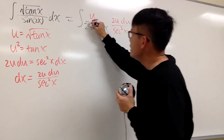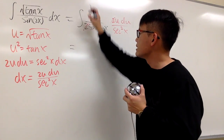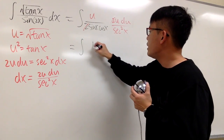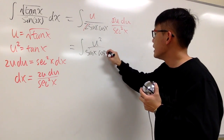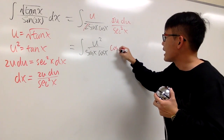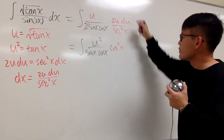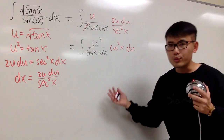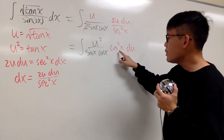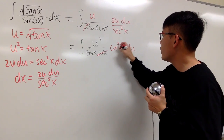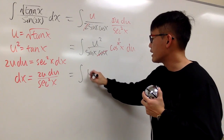This 2 and that 2 cancel — that's nice. On the top we have u times u, that's u squared. So this is the integral of u squared on the top over sine x cosine x. Now, 1 over secant squared x is cosine squared x. We have a cosine x in the denominator and cosine squared x on the top, so we can cancel one of them out. We're left with the integral of u squared on the top.